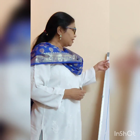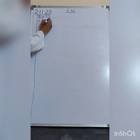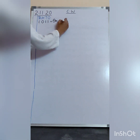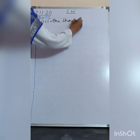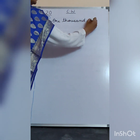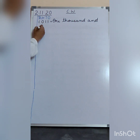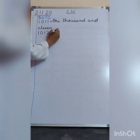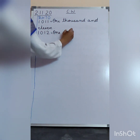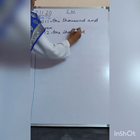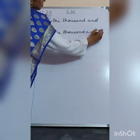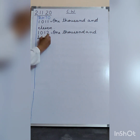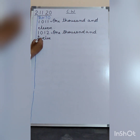Now on the next page, you will again write 1000, 100s, 10s and 1s, and we will start writing from 1,011. So 1,011. Please leave a box and then write 11, and then write 1,012.